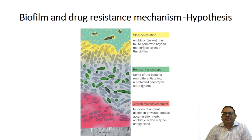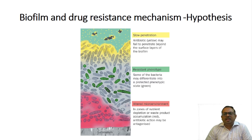The slow penetration hypothesis states that the antibiotic fails to penetrate beyond the surface layer of the biofilm because of its thick and difficult architecture. The resistant phenotype hypothesis states that some bacteria inside the biofilm develop an entirely new type of morphotype, similar to spores, which makes the organism resistant to drugs.